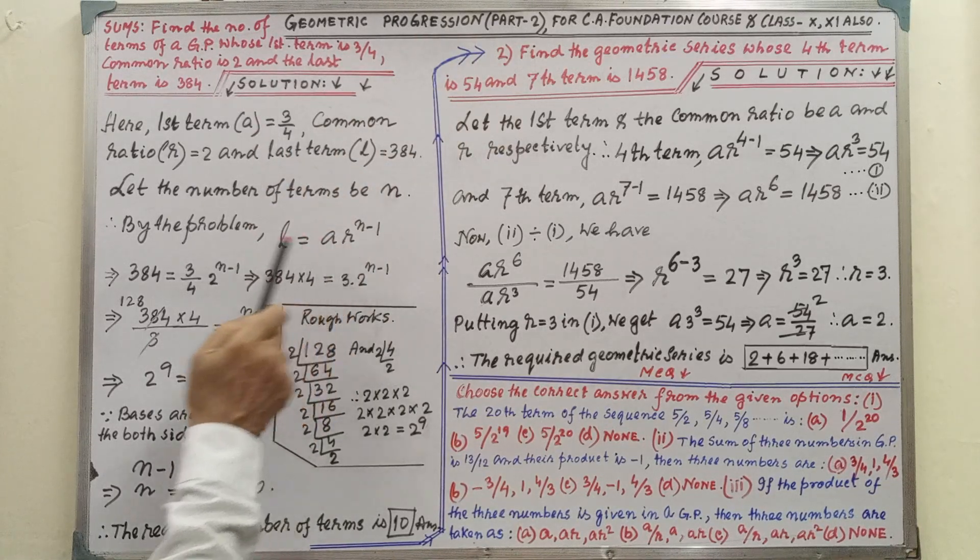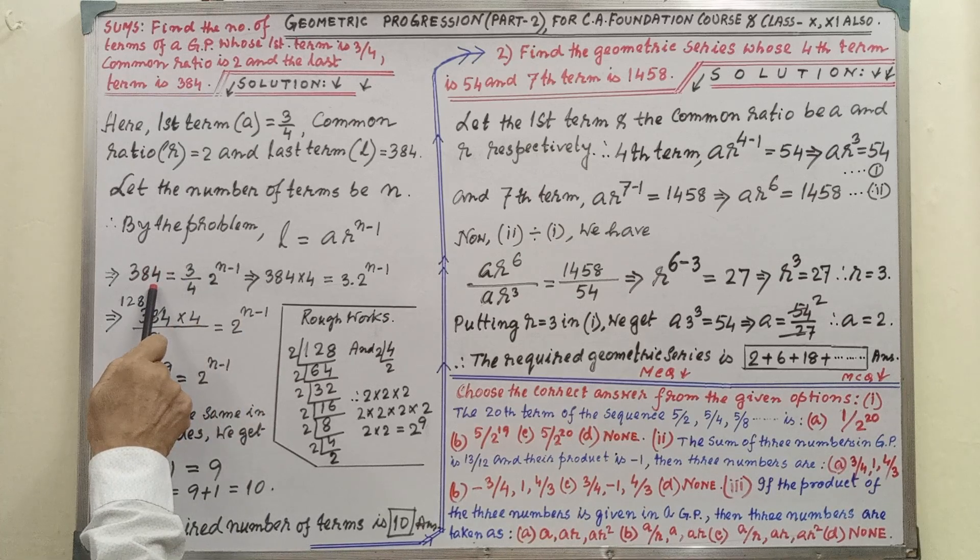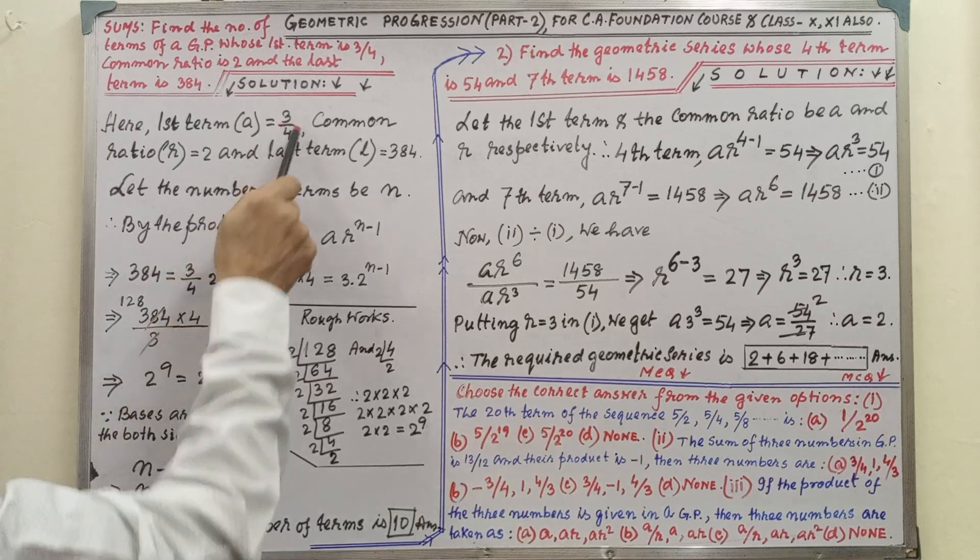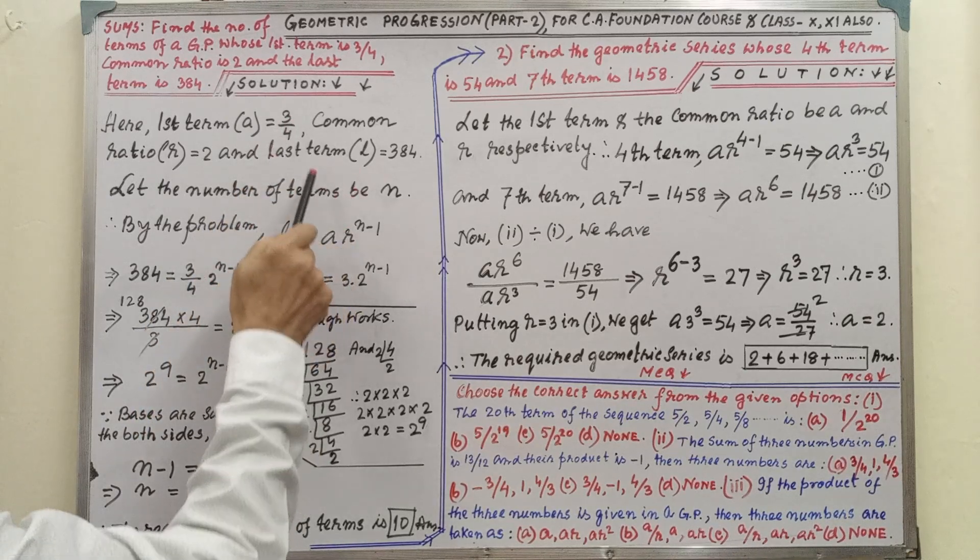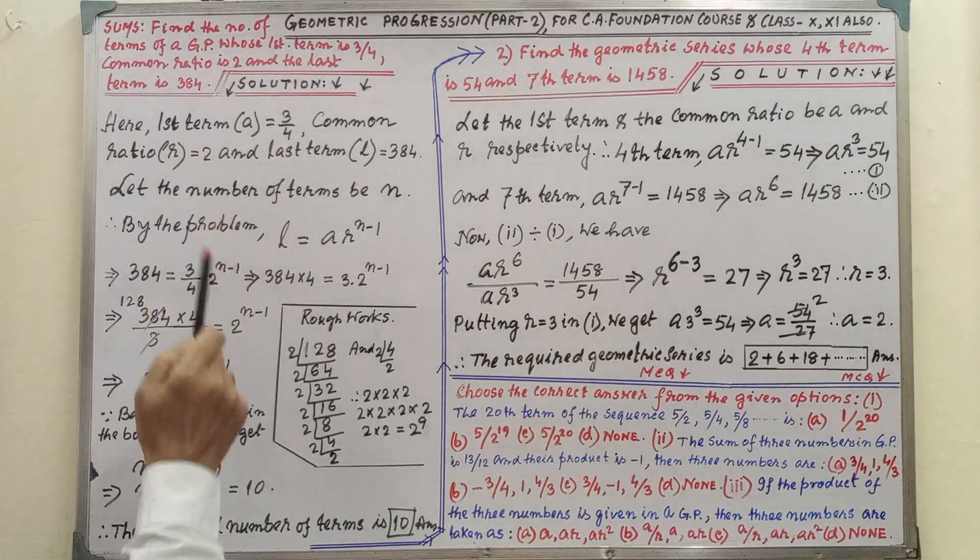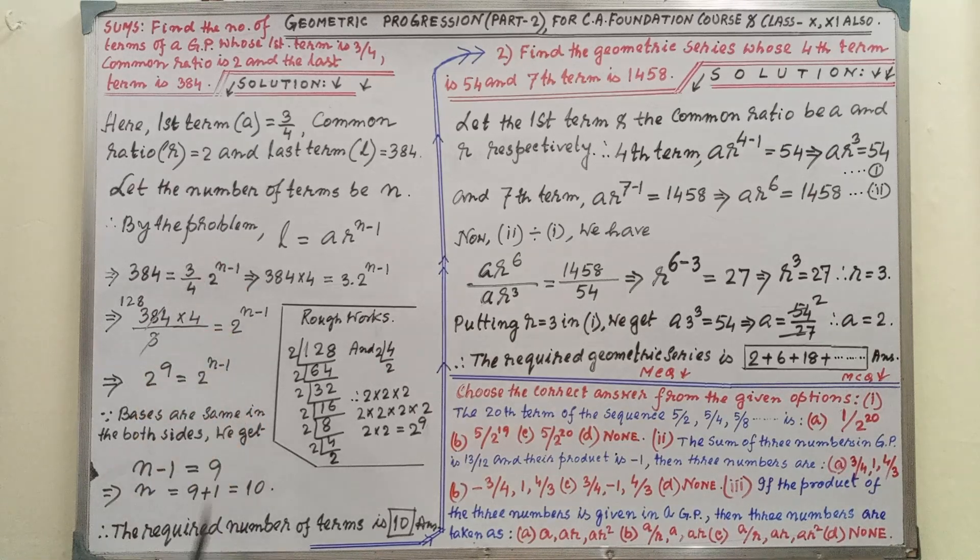After writing the formula, we have to write the relevant values. That is last term 384, first term 3/4, and common ratio 2. So 384 = (3/4)·2^(N-1).